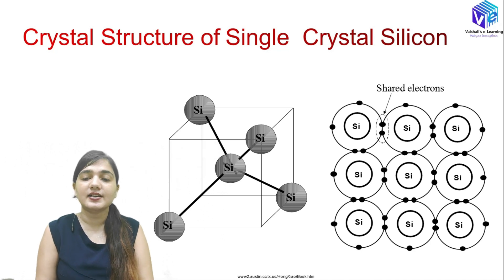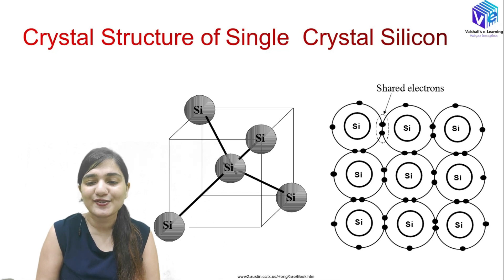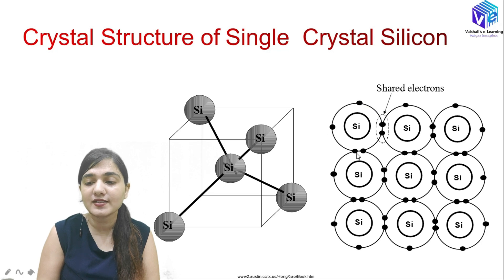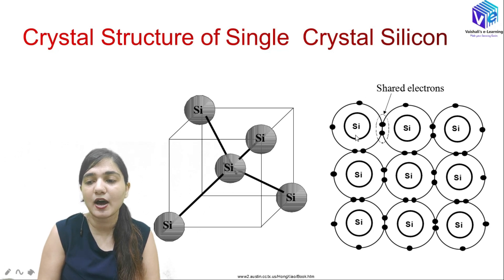Silicon has a tetrahedral crystal structure, which will be discussed in detail in future videos. Silicon has 4 electrons in its outermost shell, and neighboring silicon atoms also have 4 electrons. These are bonded through covalent bonds, forming shared electrons that complete the valence band — this is the structure of silicon.